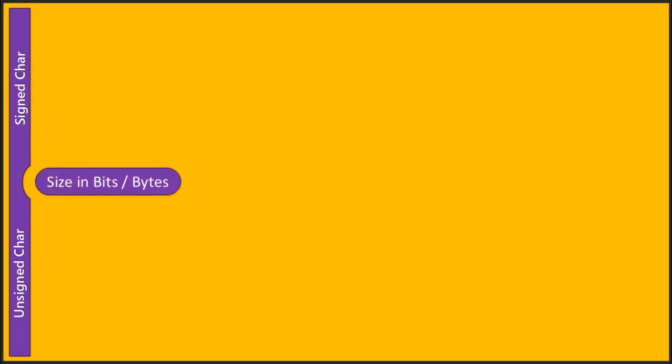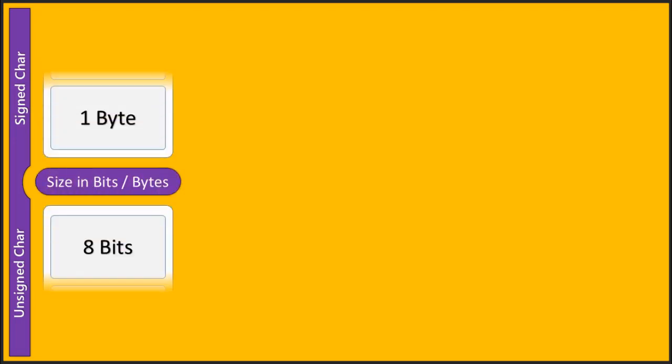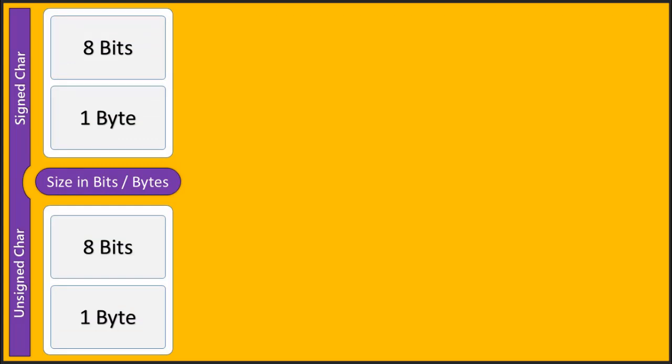We will take a few parameters to differentiate between signed and unsigned characters. The first parameter is size. There is no difference between signed and unsigned characters in terms of size, because both signed and unsigned characters take 8 bits of memory, that is 1 byte.